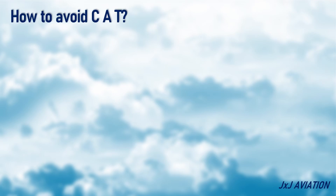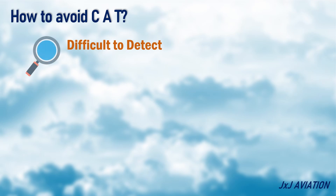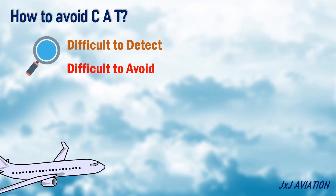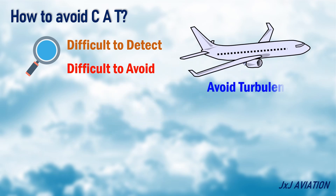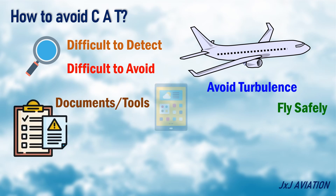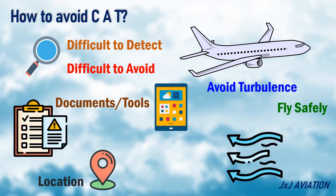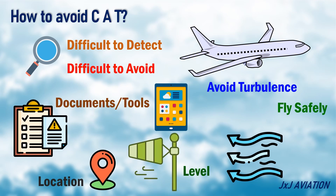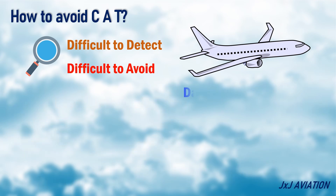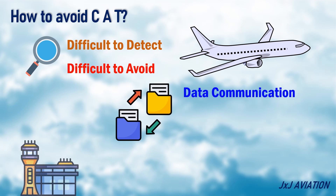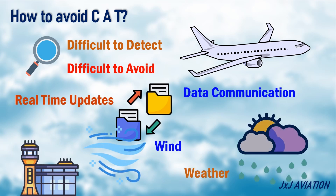How to avoid clear air turbulence? Since this turbulence is difficult to detect, avoiding it becomes impossible. However, there are some techniques used on aircraft to avoid this turbulence or safely fly through it. Different documents and tools are provided to the flight crew, which provide information regarding the possible location and the level of the turbulence. With the advancement of data communication, real-time updates regarding the wind and the precise weather conditions can be transmitted to the aircraft.